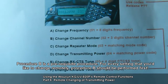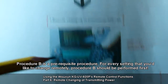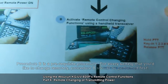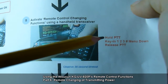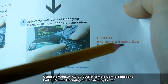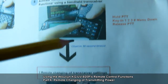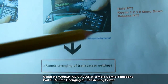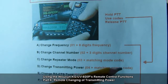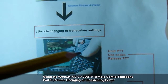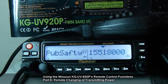For every setting you would like to change remotely, you must first do Procedure B. Procedure B is straightforward: hold the PTT of the HT controller and key in 1, 2, 3, pound, menu, down, then release the PTT. You will hear a beep on the HT controller. Then within 30 seconds, hold the PTT again and press 04 followed by the matching power code — in this case 1 for low power — then release the PTT.